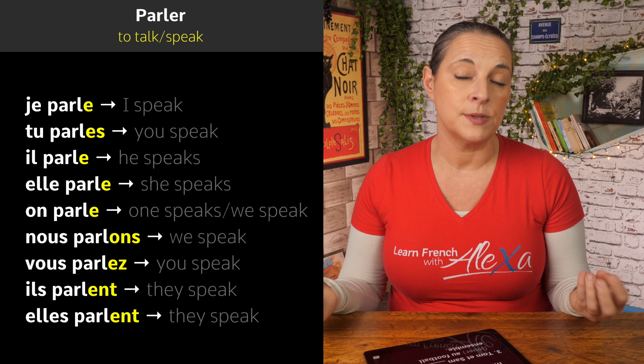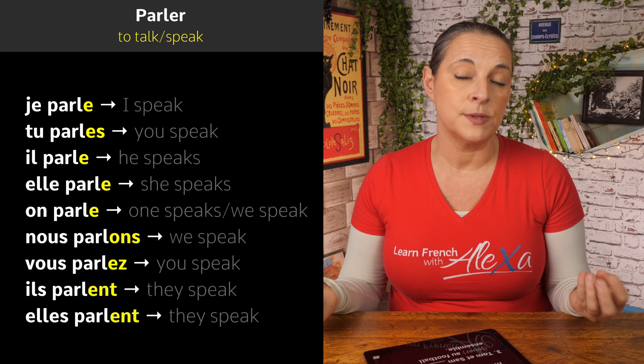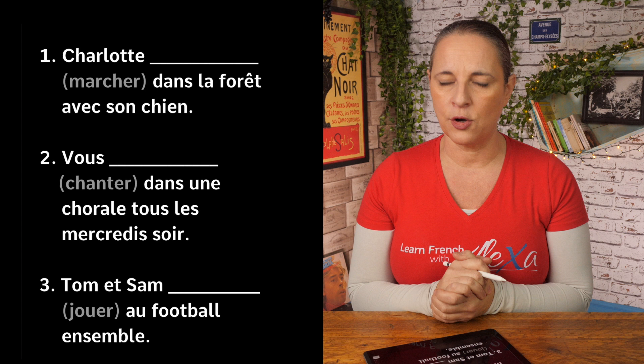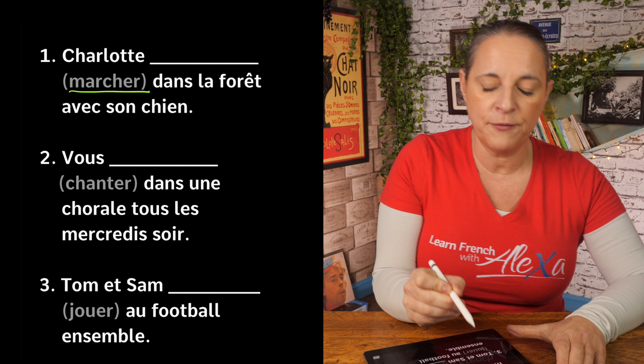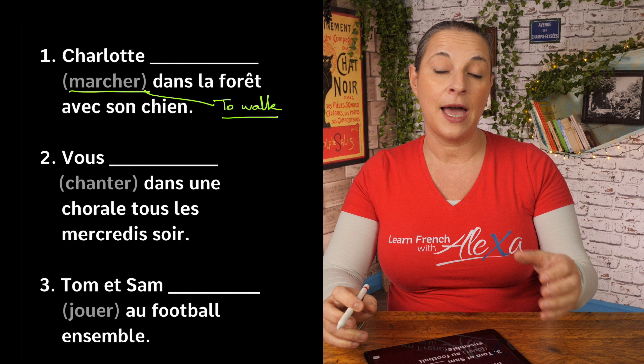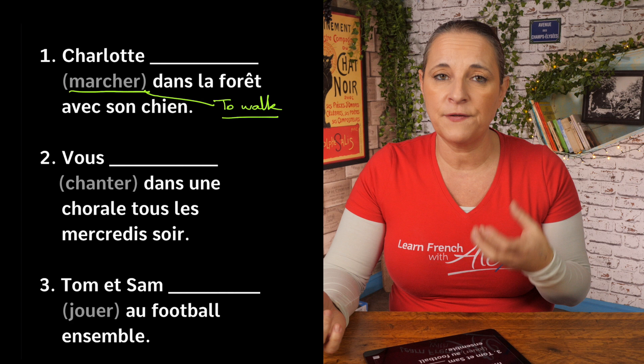Now I'm going to show you how to conjugate these verbs in context. Try to do it with me — this is the best way to learn. We have Charlotte, and we want to conjugate the verb marcher. The verbs are in brackets in their infinitive form. The infinitive in English would be 'to walk.' We have not yet conjugated that verb; in English, it would be 'she walks' — we'd add an S. Well, we do the same in French: we use special endings according to the subject pronoun.